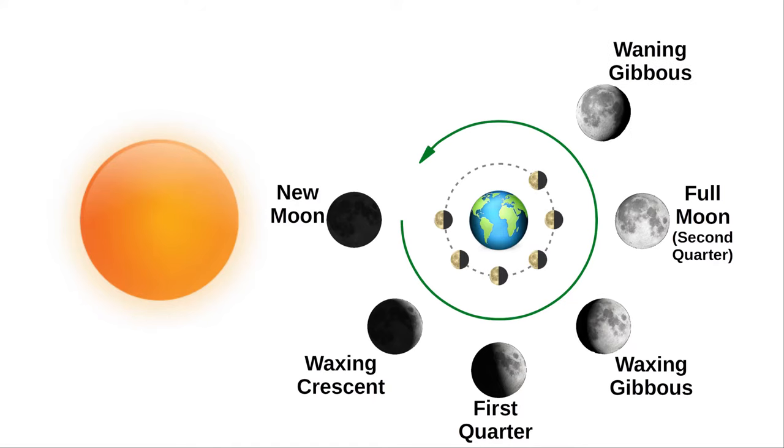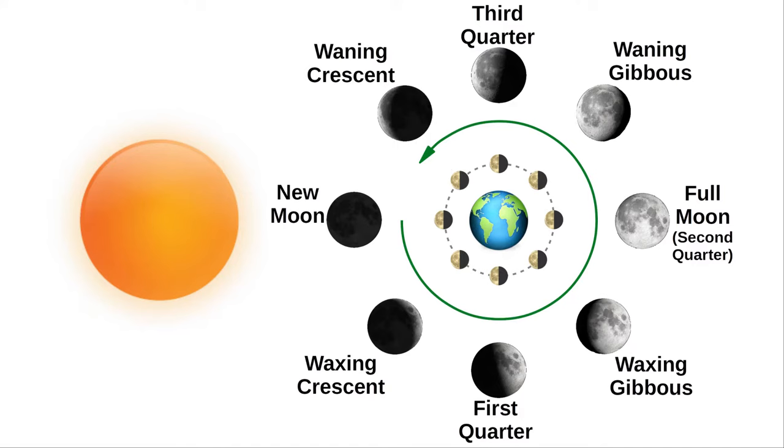Waning means decreasing, so our next Moon is waning gibbous. We reach another half Moon at third quarter. Next is waning crescent. And finally, we get back to new Moon, also called fourth quarter.